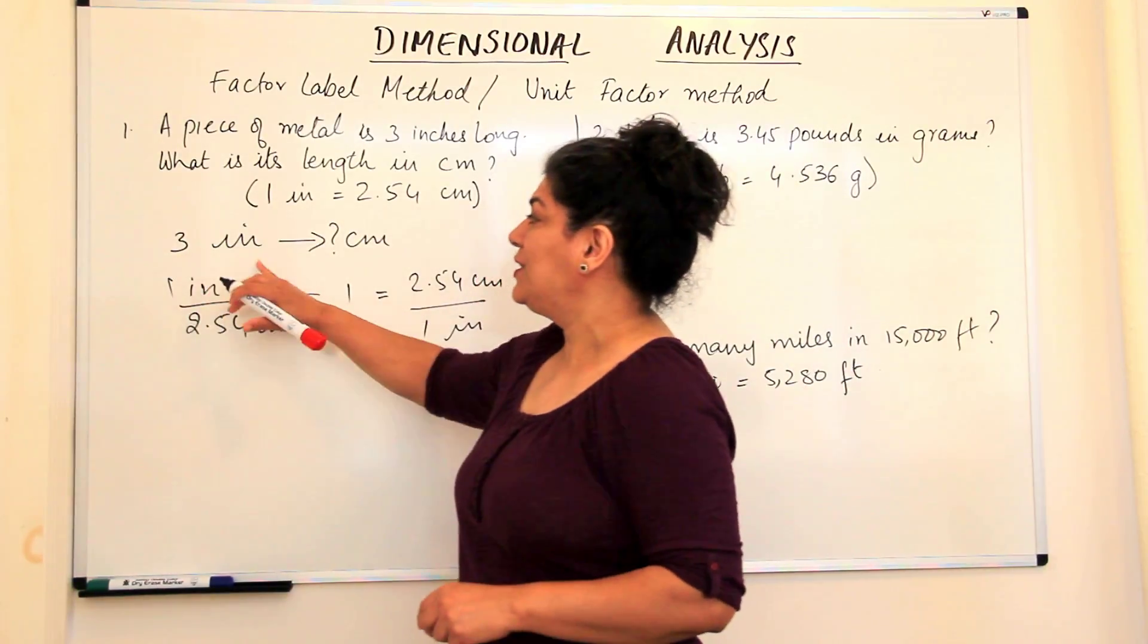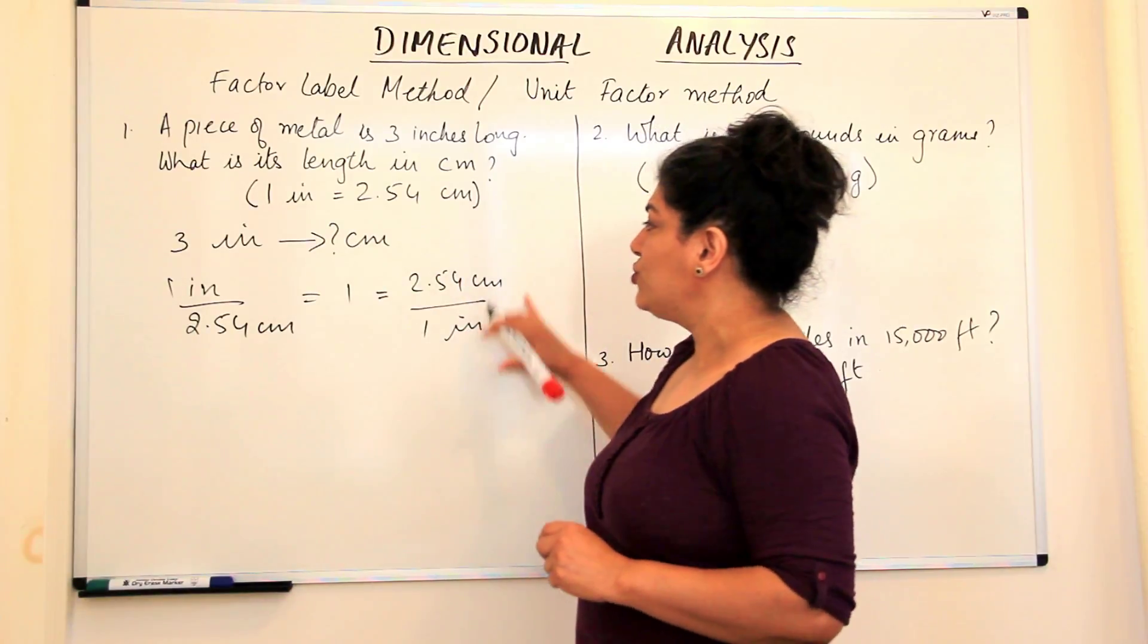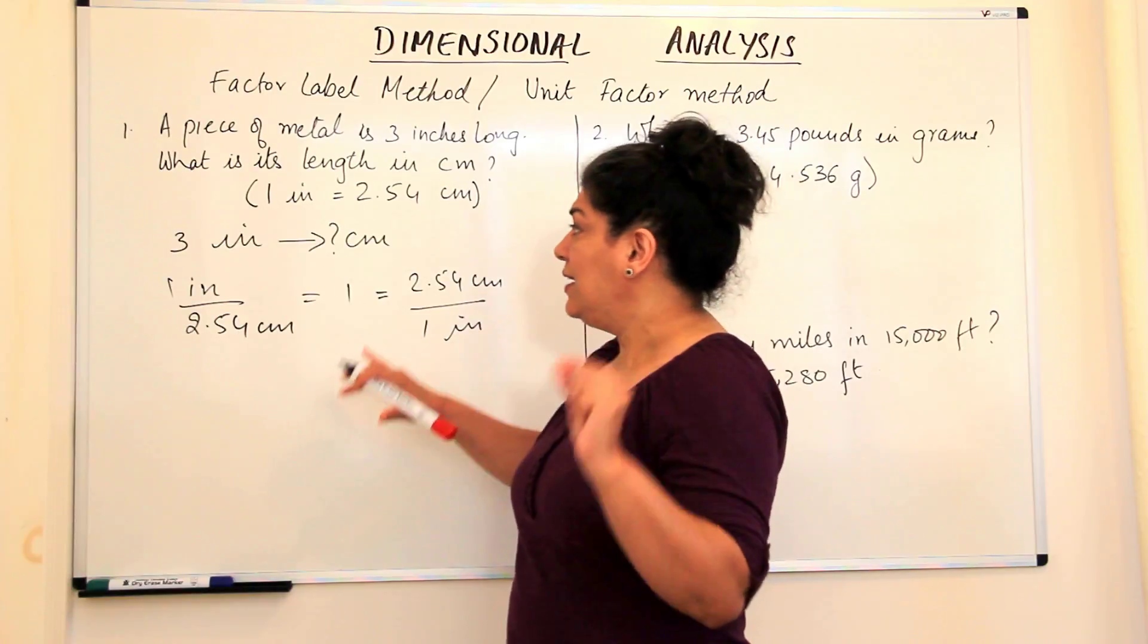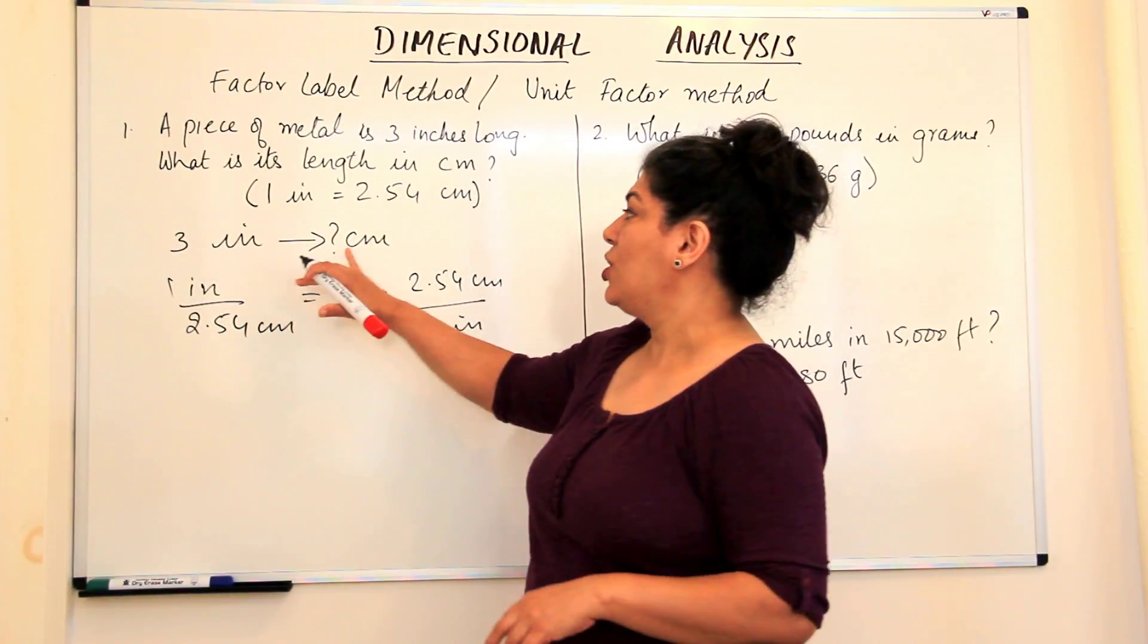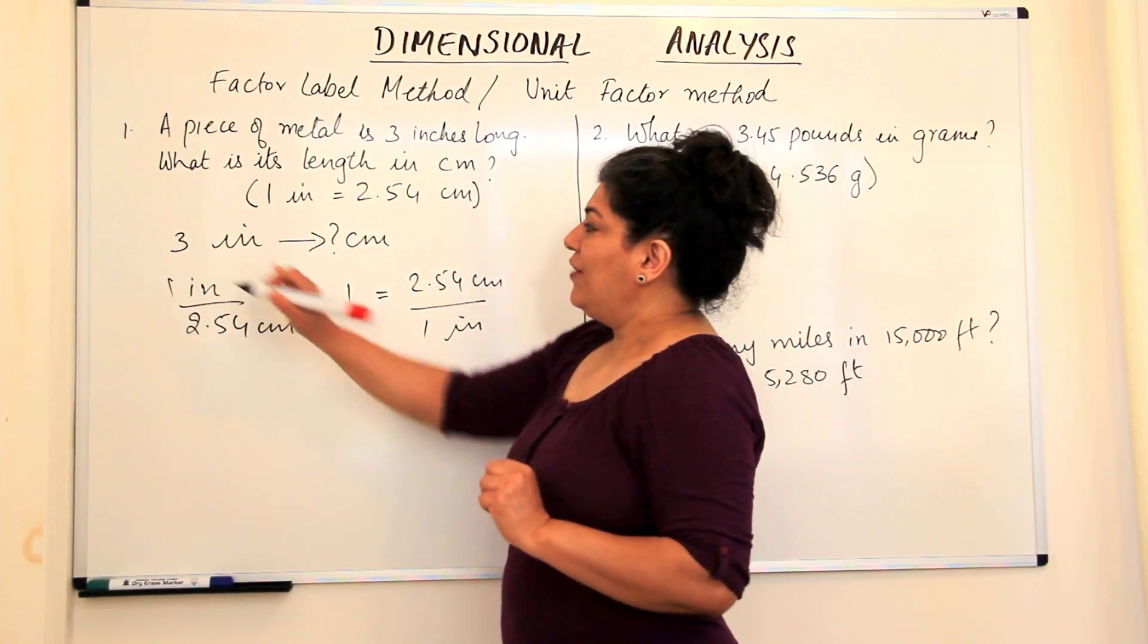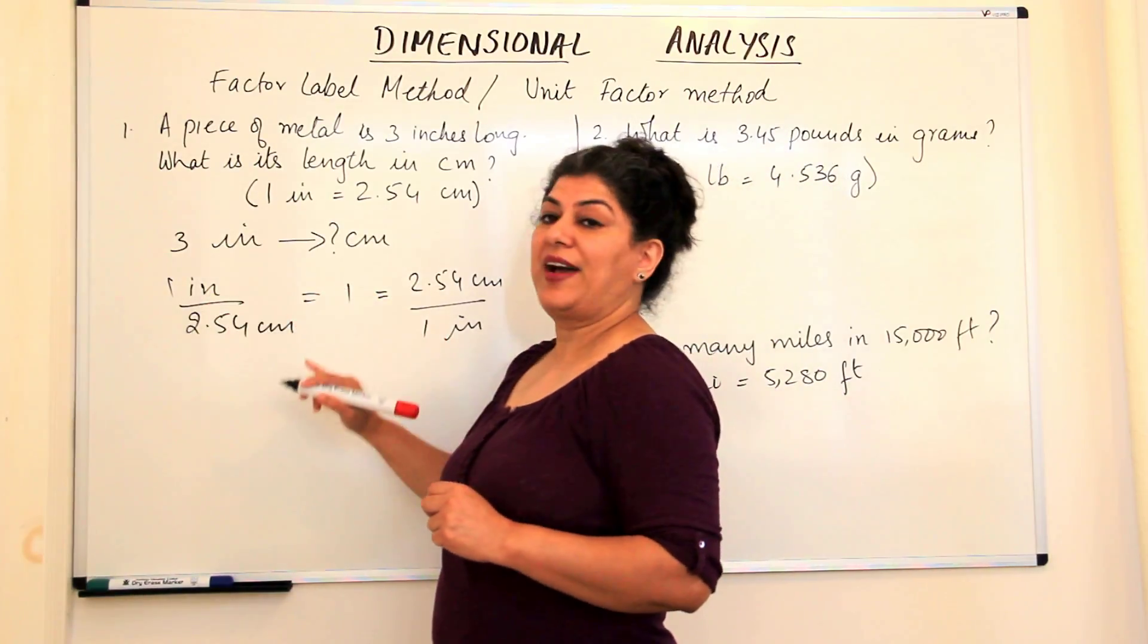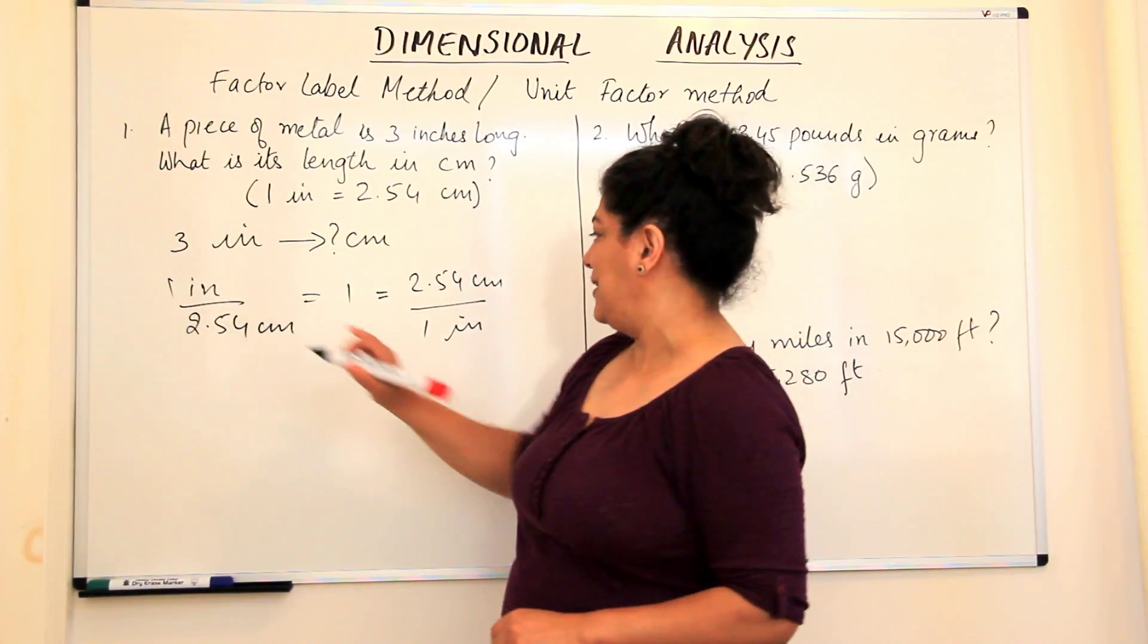Our aim is to convert the three inches to centimeters in such a way that we use one of these unit factors in a way that the inch is cancelled out, while the centimeter is retained. Now if I have inches in the numerator and I multiply it by a factor which has inches in the denominator, my purpose would be solved. Let's see how it is done.